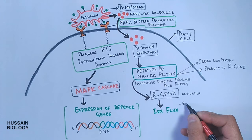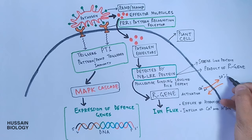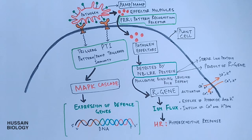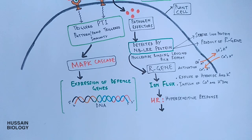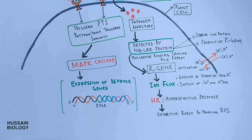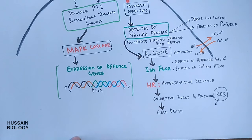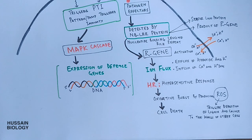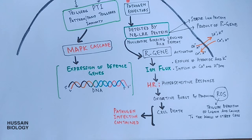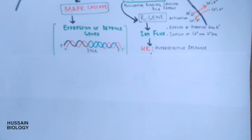Upon detection of pathogen effectors, the R genes are activated, which causes ion flux — a flux of hydroxide and potassium ions and an influx of calcium and hydrogen ions — and this ultimately causes HR, that's hypersensitive response. The HR in turn causes oxidative burst by producing ROS, with which the cell gets destroyed. It must be noted that ROS also triggers the deposition of lignin and callose to the walls of surrounding cells, so that infection is not dispersed to other cells.